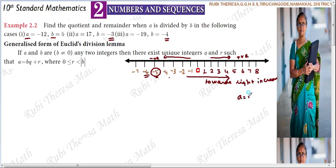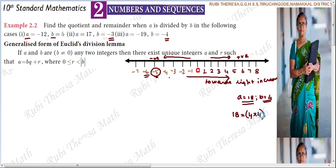For example, A equals 18 and B equals 4. We need a multiple of 4 that is less than or equal to 18. 4 into 4 is 16; 4 into 5 is 20 — that exceeds 18. So the quotient is 4. The remainder is 18 minus 16, which gives plus 2.